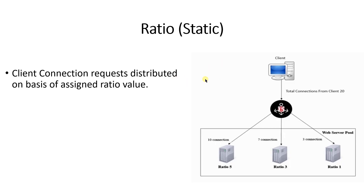As you can see, node one has a ratio value of five, node two has a ratio value of three, and node three has a ratio value of one. Accordingly, node one gets 10 connections, node two gets seven connections, and node three gets three connections. In static ratio load balancing, it doesn't consider the performance of the server device, but it does support node or pool member based load balancing.